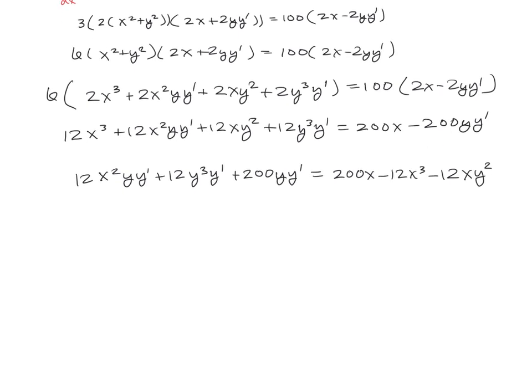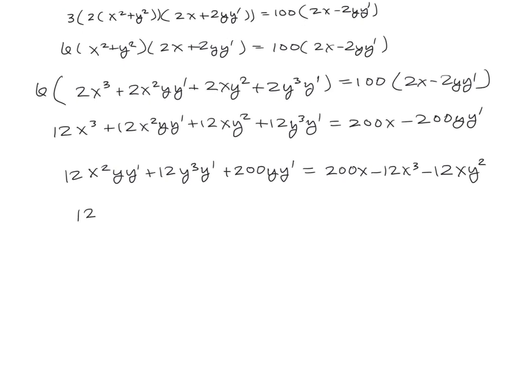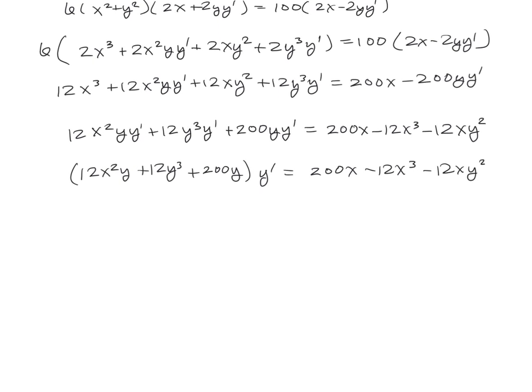Next up, factor out those common y primes. So 12x²y plus 12y³ plus 200y, all times y prime, is equal to 200x minus 12x³ minus 12xy².